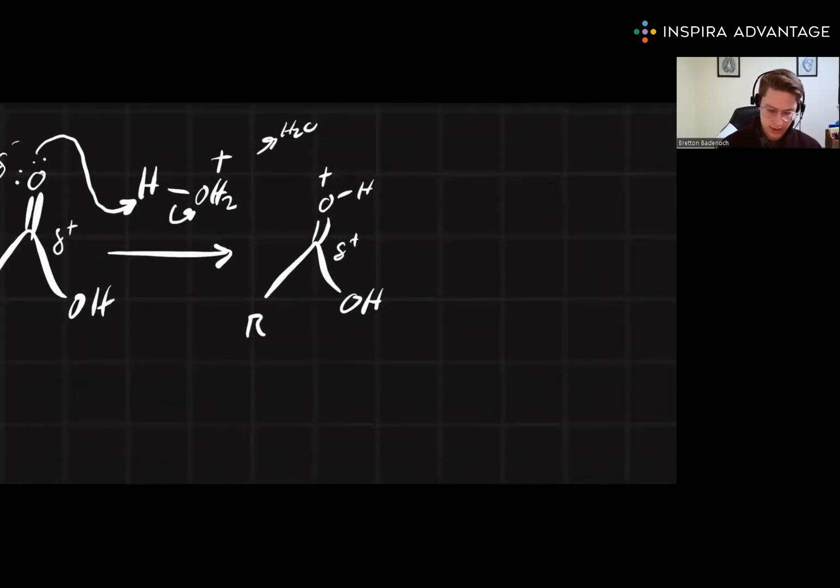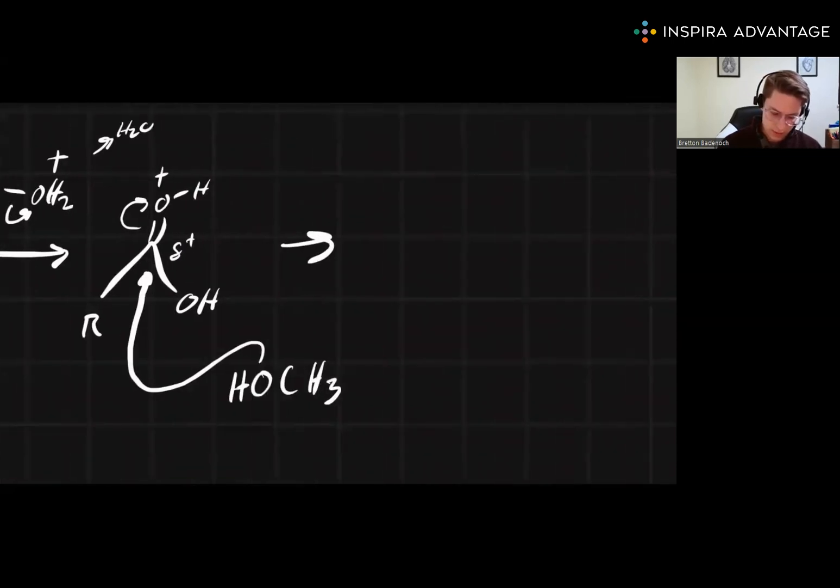So let's attack it with something like this. Just a simple alcohol. This alcohol, we're going to pop up in there, kick on up. This should look familiar. We're going to kick on up the extra electron. It's going to give us something like this.